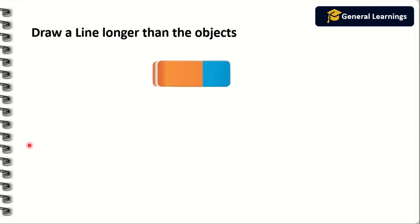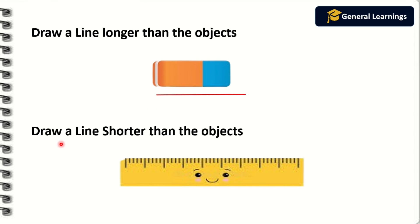Next they have told us to draw a line longer than the given object — they have given an eraser, so we should draw a line with more length than this eraser. That will be called longer. Next they have told us to draw a line shorter than the given object — they have given a scale, so we should draw a line with smaller length than this scale. That will be called shorter.